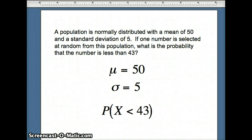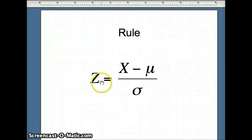We're looking for the probability that a number is less than 43. We know how to deal with z's, so how do we convert an x into a z? We're going to do that with the following rule: z is simply x minus mu over sigma.